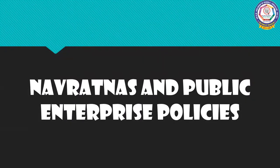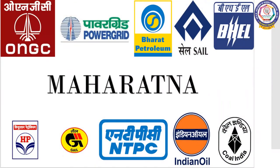Navaratnas and public enterprise policies. Navaratnas refer to nine profit-making companies. In order to enable companies to compete more efficiently at a global level, the central public sector enterprises are designated with different statuses like Maharatnas, Navaratnas, and Miniratnas, based on average annual net profit and average annual turnover. Maharatna status is the highest status given to an enterprise, awarded to companies that have already received Navaratna status.